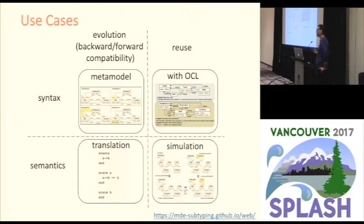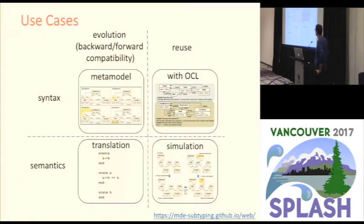In that case, our approach provides support for reusing model management operations defined for the graph metamodel. For example, we could have an operation for applying a function to a node and reuse that operation for simulating a deterministic state machine stepwise. These use cases are documented on the web page and have been implemented using our approach.